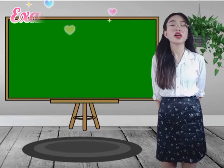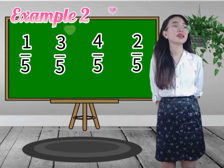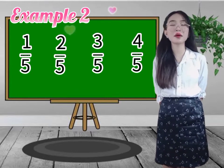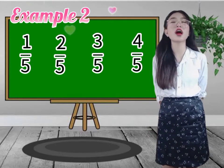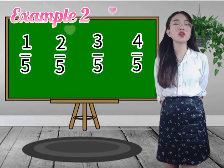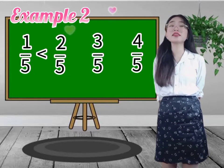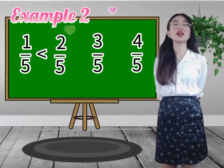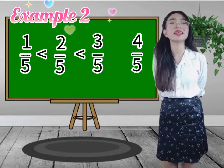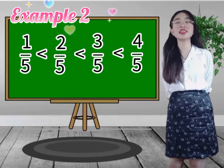Another example — arrange this from smallest to greatest. I'll give you 10 seconds. Same as example number 1, we already have the same denominator, so let's compare the numerator. If we compare 1 and 2, what symbol will we use? Very good — it is less than. If we compare 2 and 3? Less than. And 3 and 4? Still less than.